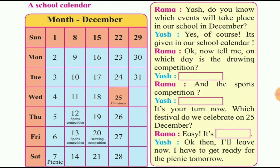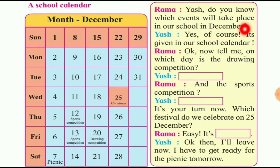Now we learn the sentences. Rama asks Yash: 'Do you know which events will take place in our school in December?' यश को पूछ रहे हैं — क्या तुम जानते हो कि कौन-कौन से events December में हमारे school में होने वाले हैं? Yash says: 'Of course, it's given in our school calendar.' ये तो हमारे school calendar में दिया हुआ है.